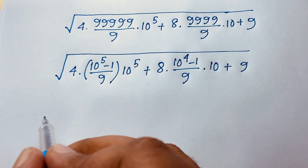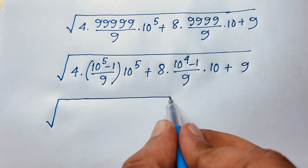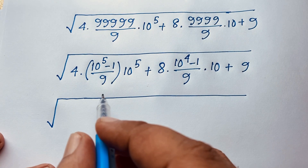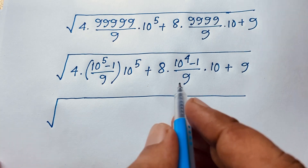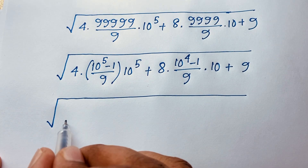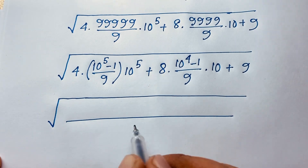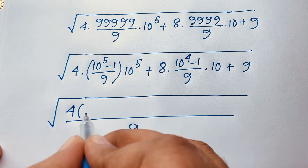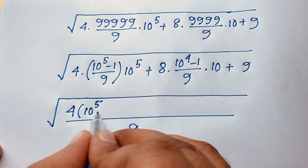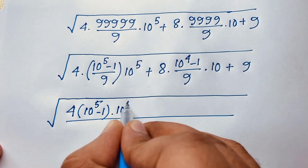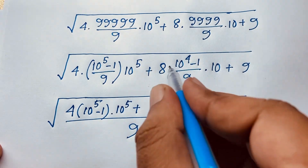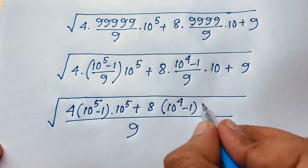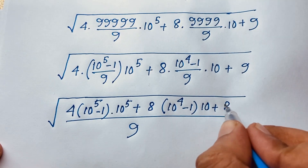8 times 10 to the power 5, then here square root. And at this moment I can easily see the least common value is 9 — this 9 and this 9 — so it will be: dividing through by 9, this divided by this it will be 4 times 10 to the power 5, minus 1, times 10 to the power 5, plus — this cancels out — it will be 8 times 10 to the power 4, minus 1, and here is 10. And 9 times 9 it will be 81.